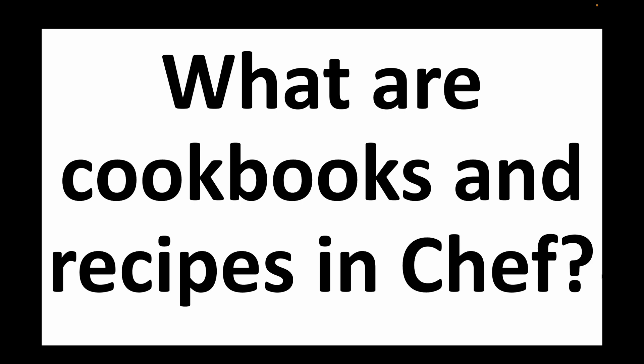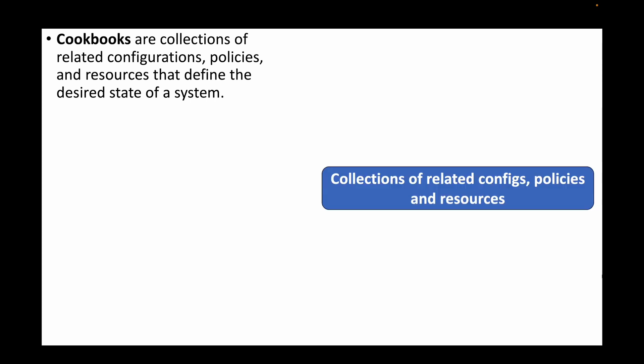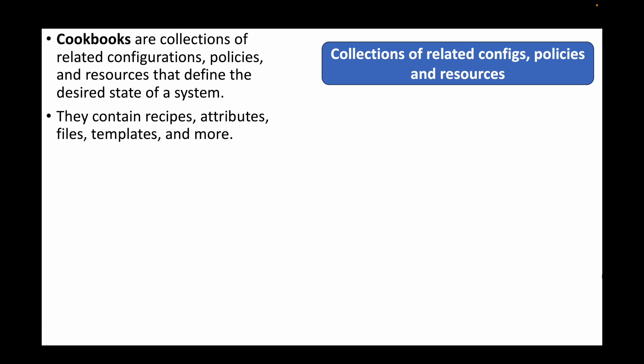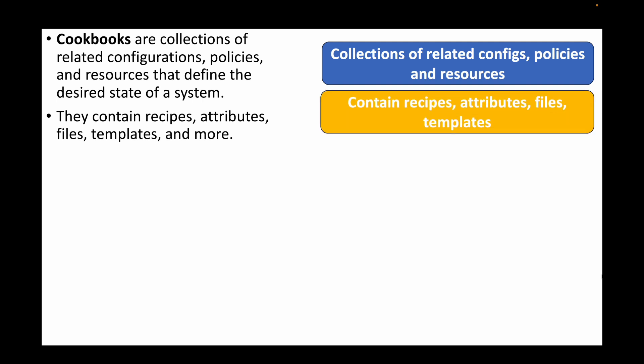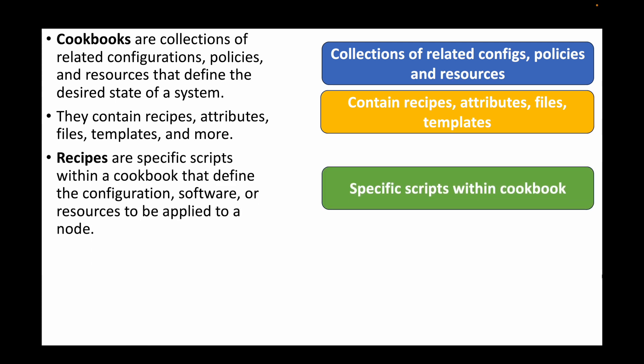The next question is: what are cookbooks and recipes in Chef? A cookbook is essentially the script — a collection of related configurations, policies, and resources which defines the desired state of your system. It defines what you want to do on the remote machine. Within a cookbook it can contain recipes, attributes, files, templates, and more — different modules.